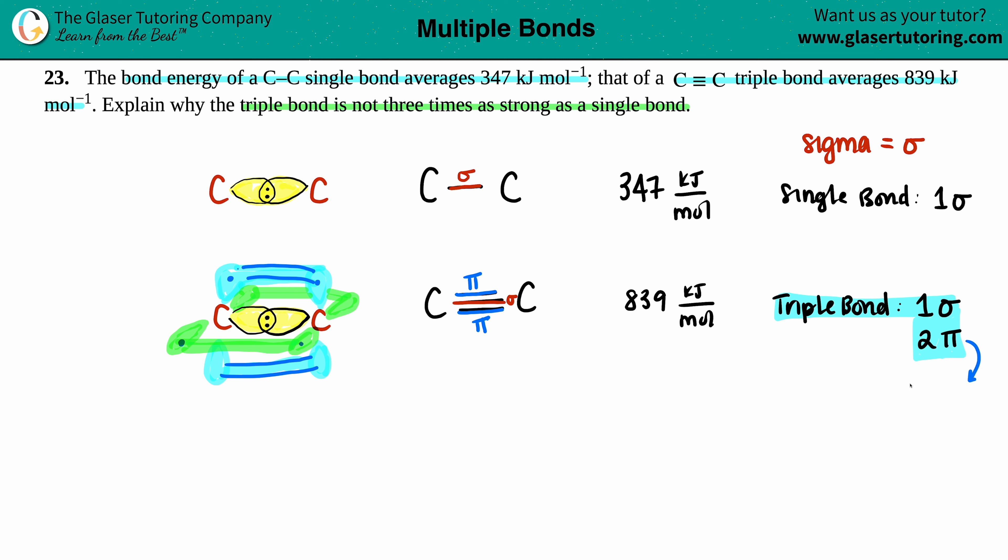The pi bonds are not as strong as a sigma bond, mainly because it's, you know, on top and bottom or in front and in back. It is not the bond directly from nucleus to nucleus. That's the sigma bond and that's the strongest bond. So hopefully all of this that we went over explains why the triple bond is not three times strong as a single bond. And there you go.